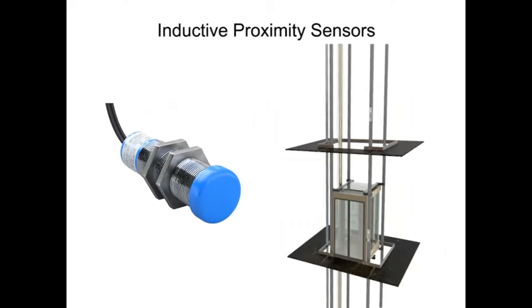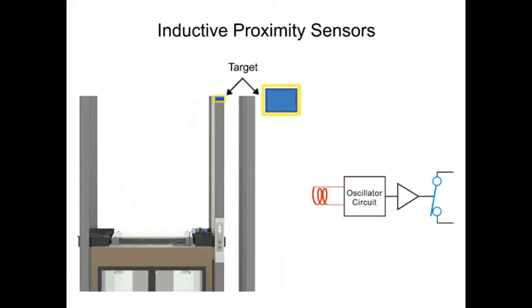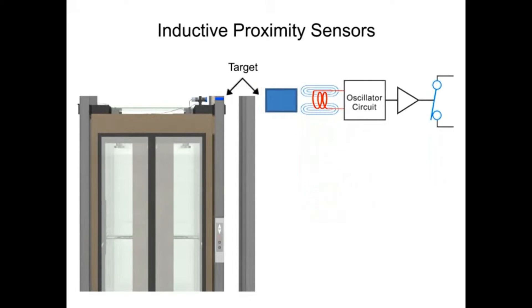Inductive sensors can detect a target from 0.5 mm to 40 mm. They only detect metallic targets and therefore use a magnetic field to detect its presence. When a ferrous metal material enters the magnetic field,